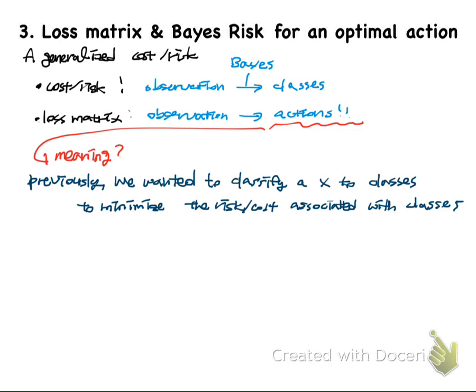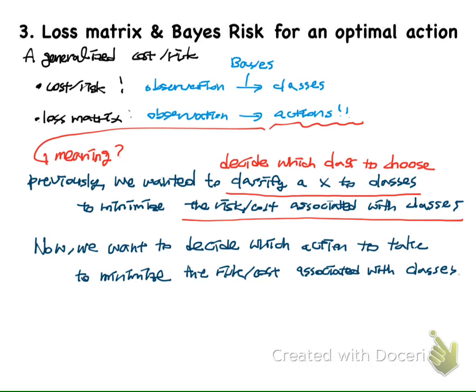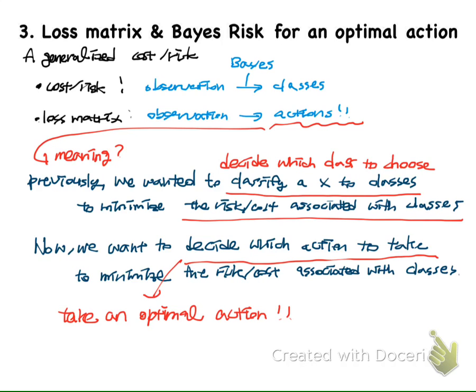Previously, we wanted to classify an X to classes to minimize the risk or cost associated with the classes. Basically, we want to decide which class to choose so that the total cost or risk will be minimized. Now, we want to decide which action to take to minimize the risk or cost associated with the classes. Basically, we want to take an optimal action so that the total risk or cost will be minimized.